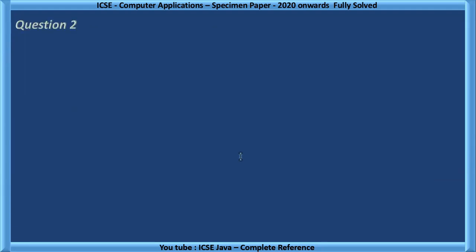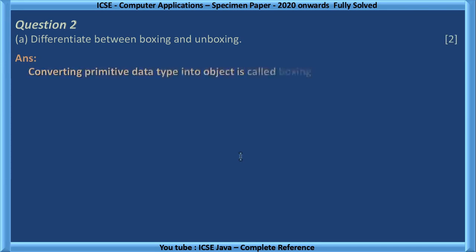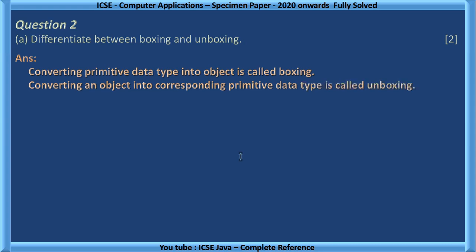Question number 2, differentiate between boxing and unboxing. Converting primitive data type into object is called boxing. Converting an object into corresponding primitive data type is called unboxing. These terms are added into new syllabus. In the old syllabus, it was called wrapper classes. I have already explained wrapper classes in my previous video, please refer it, then you will understand it clearly.